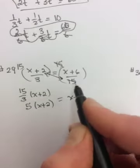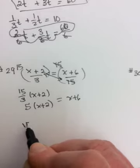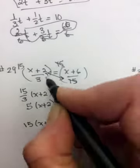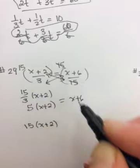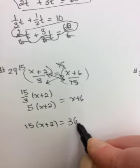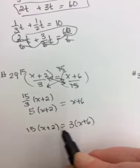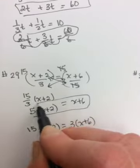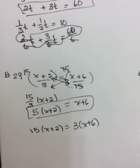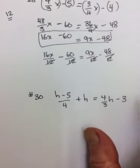The other option you could have done here, because there's only one term on each side, is you could have cross-multiplied. So you could have multiplied this term by 15. So 15x plus 2. And then this term, these two terms together, 3x plus 6. And then in the end, if you divide everything by 3, you end up with what we have here. And then solve for x by multiplying through.